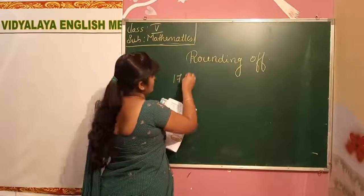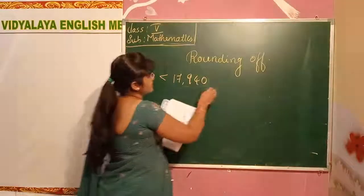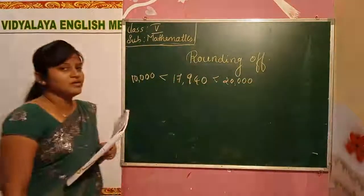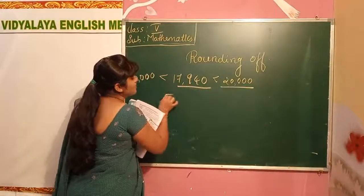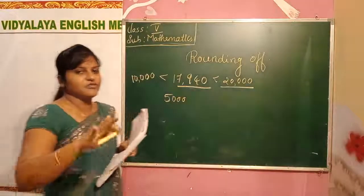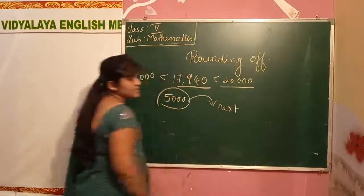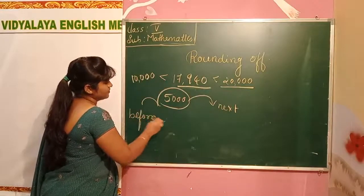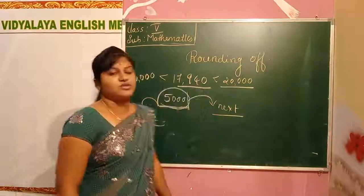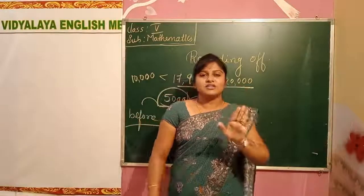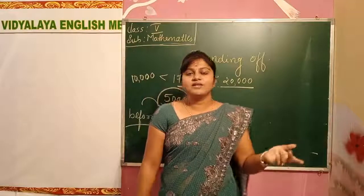For example, if we have 17,940 — it is greater than 10,000 but less than 20,000. But it is nearer to which number? In the thousands place, we have more than 5,000. Where 5 is the middle line for everything. If it is crossed to 5,000, then we write the next number. If it is less than 5,000, we write the before number. So 5,000 is the pillar of the rounding of numbers. Understood how to write the before and next number?